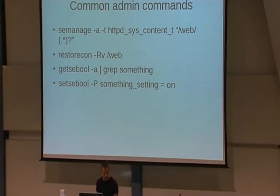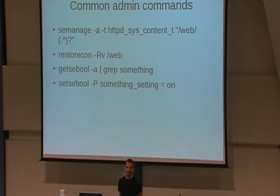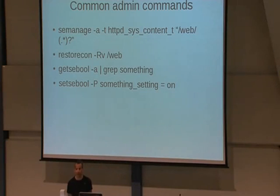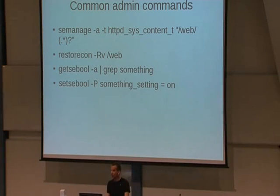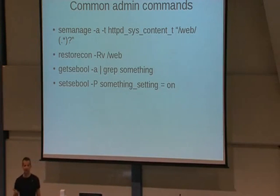The `audit2allow -a -m` command creates an SELinux policy module — a .pp file — and then you use `semodule` to enable it. For common administration on RedHat, Fedora, or anything natively with SELinux, you basically use `semanage`. There are different alternatives, but `semanage` is the most flexible of all the management commands. It has a very good man page with examples at the end.